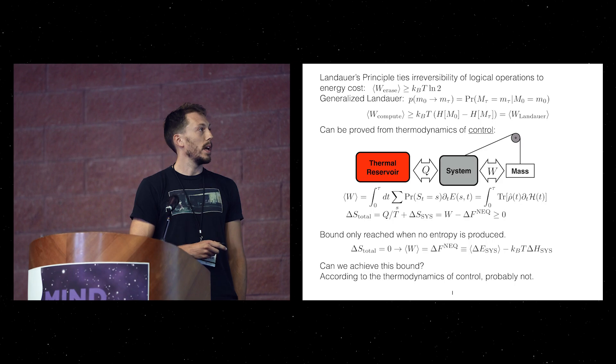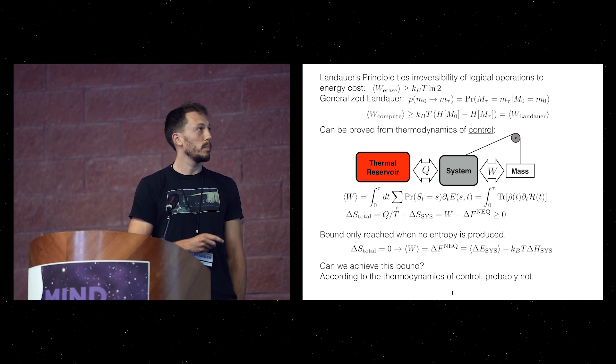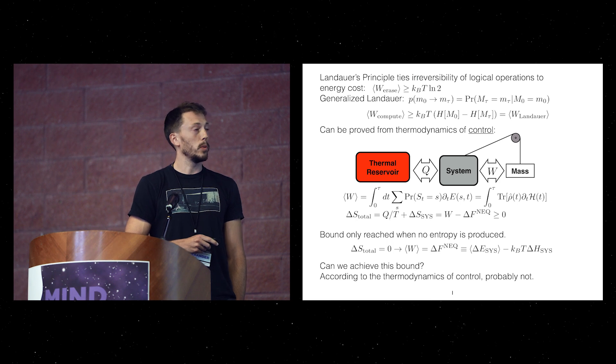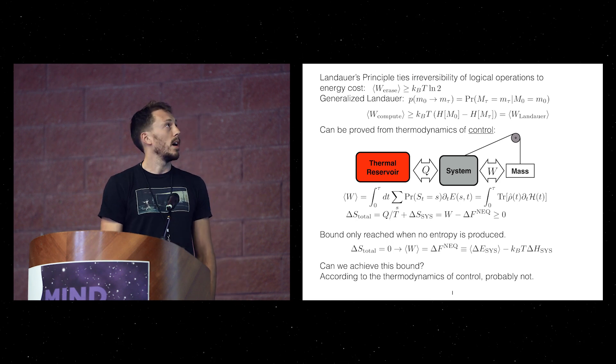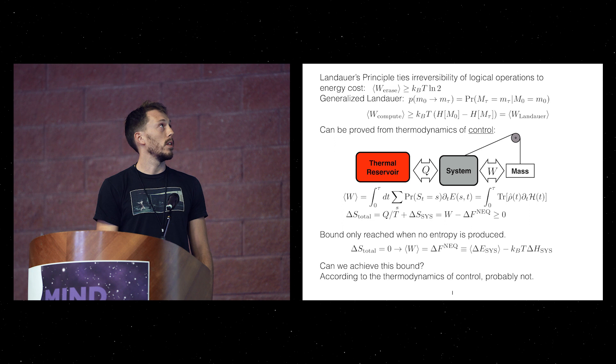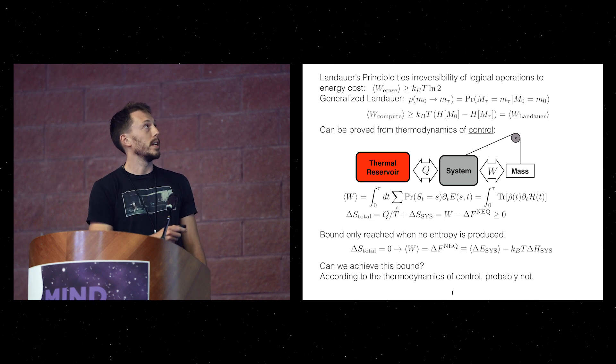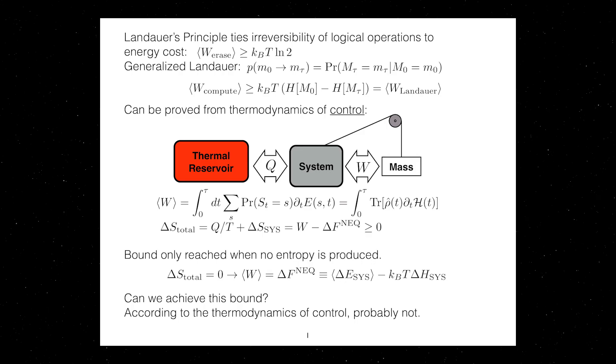If you have a system that's in contact with a thermal reservoir at a temperature T and it's controlled by some external Hamiltonian which couples it to a work reservoir, you find that the work required to erase a bit is at least KT log 2. Wolpert covered this nicely in his talk.